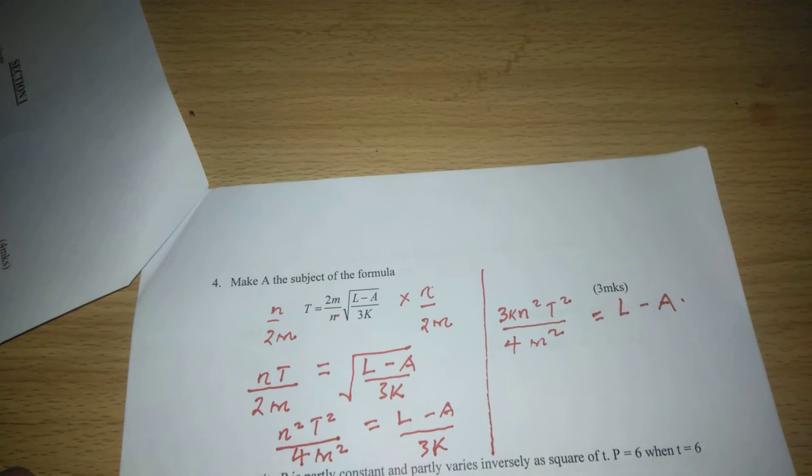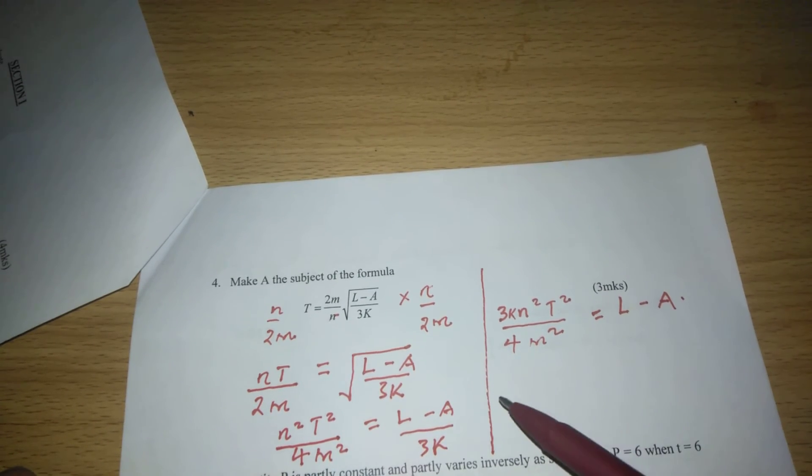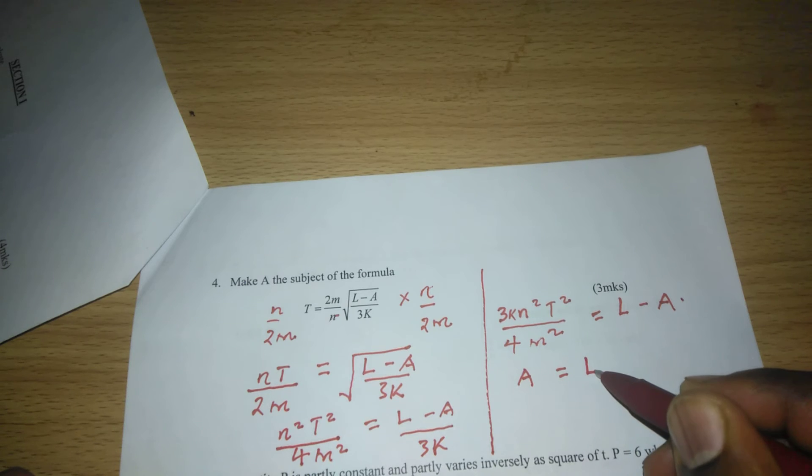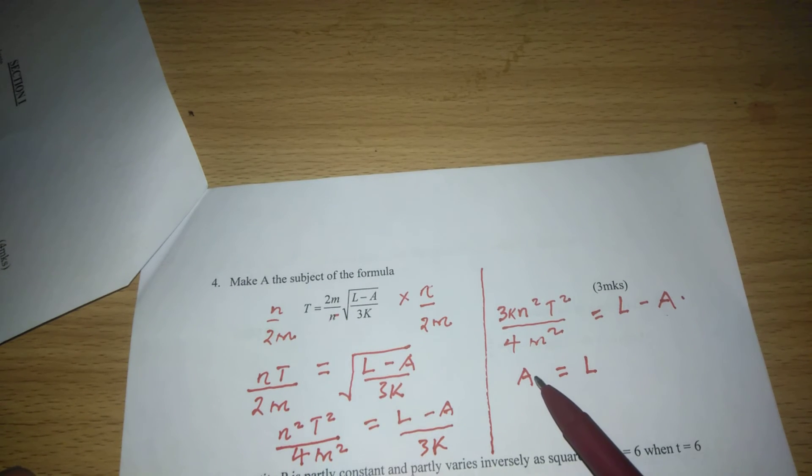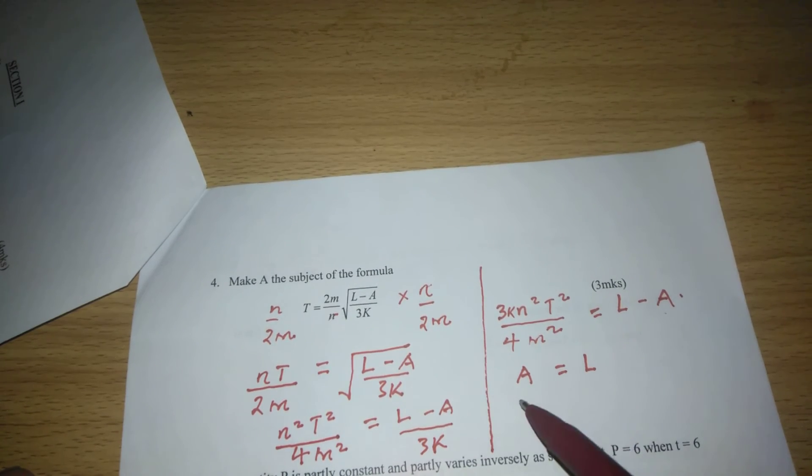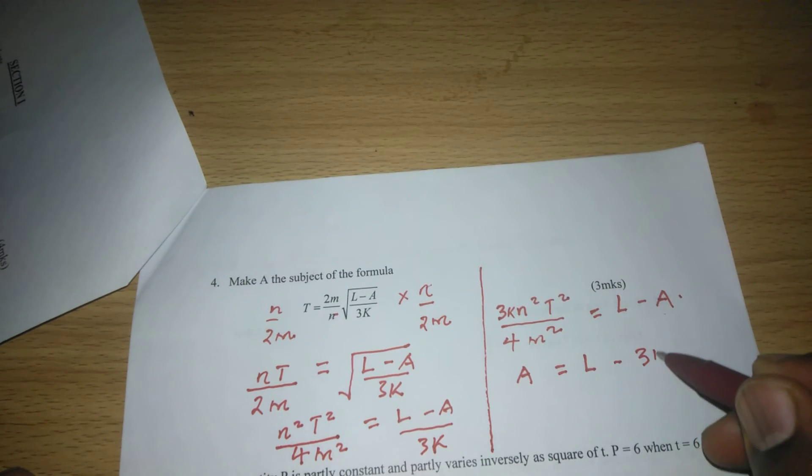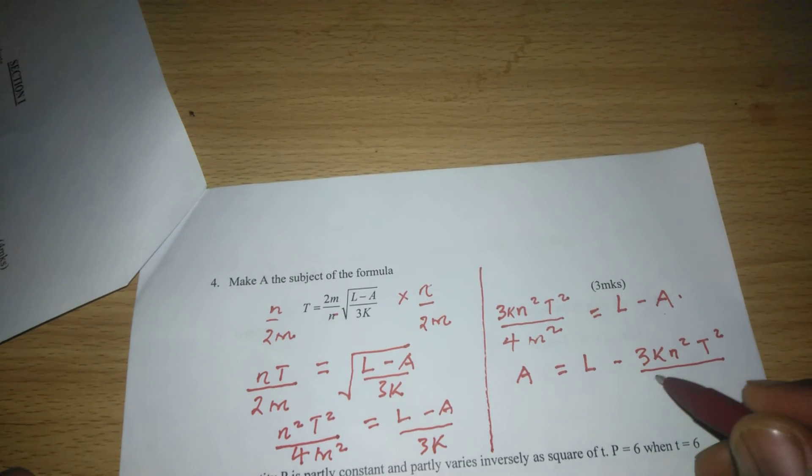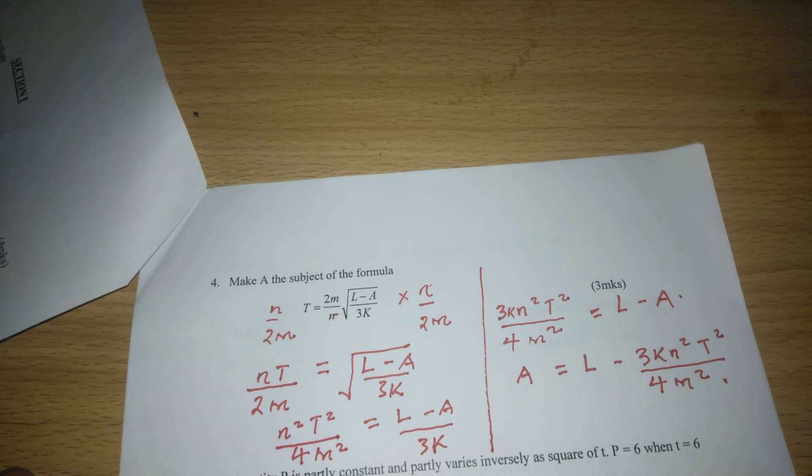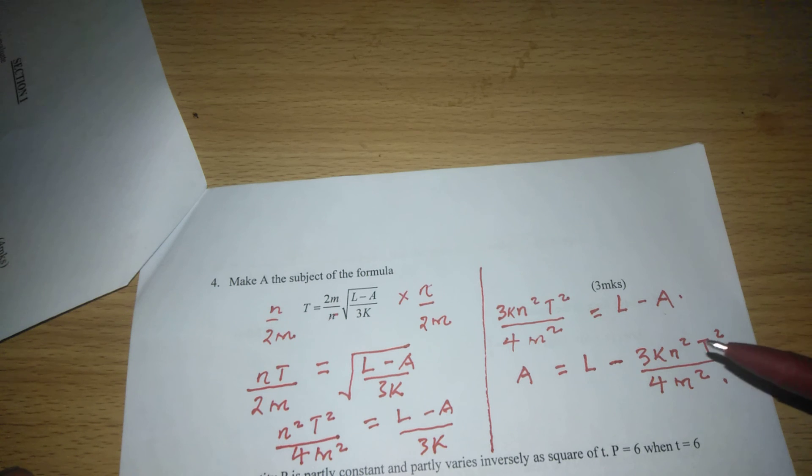Remember, we want to remain with 'a' alone. So we can bring 'a' to this side. We have L on one side, and 'a' has become positive at the left-hand side. Now we can carry the whole of this term to the other side, so that 'a' remains alone. So we'll have A equals L minus 3K n squared t squared divided by 4m squared. By rearranging these variables like that, 'a' has remained on one side alone, and we say that 'a' has been made the subject of the formula given here.